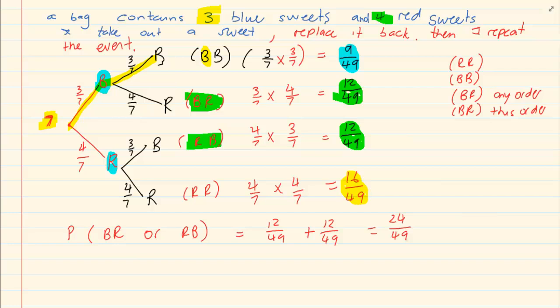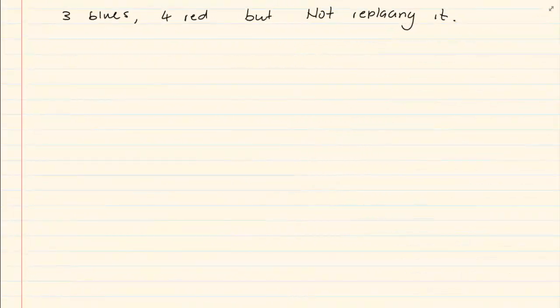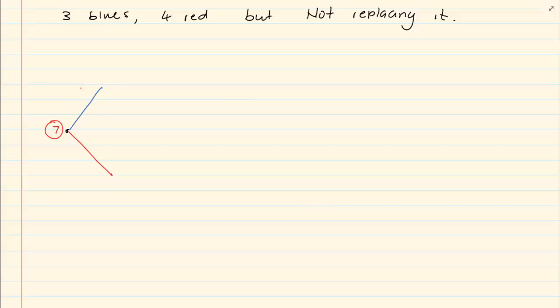You need the tree diagram to understand probability for grade 11, so you must understand how I got three over seven and three over seven. Now let's do another example where you are not replacing the sweet as you take it out. I am starting with seven sweets. My first level is still three over seven for blue and four over seven for red.